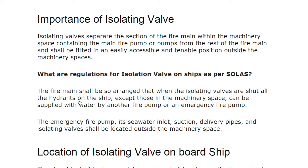The regulation states that the fire main shall be so arranged that when the isolating valves are shut, all the hydrants on the ship except those in the machinery space can be supplied with water by another fire pump or an emergency fire pump. This means all valves on the deck, in accommodation, and in other spaces can still be supplied, while the machinery space is supplied by the emergency fire pump. The sea water inlet, suction, delivery pipes and isolating valve shall also be located outside the machinery space.